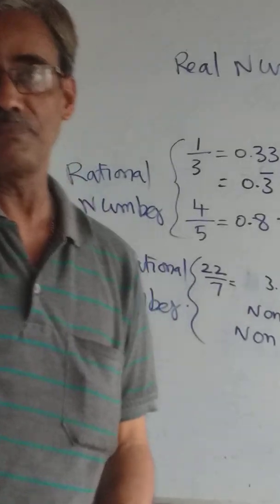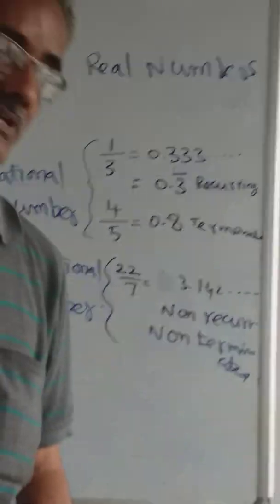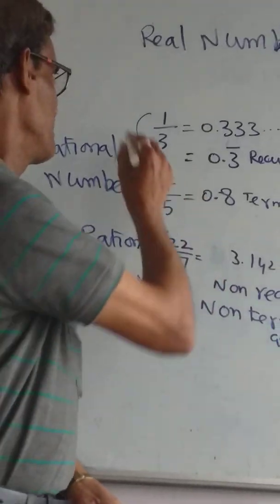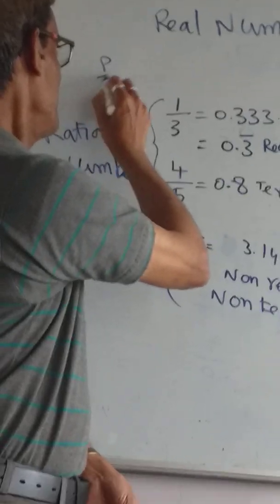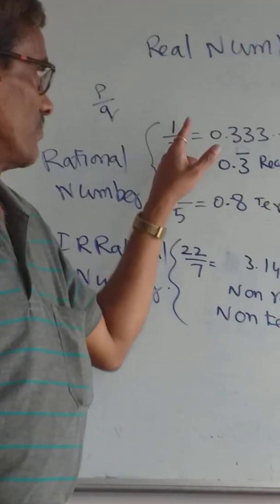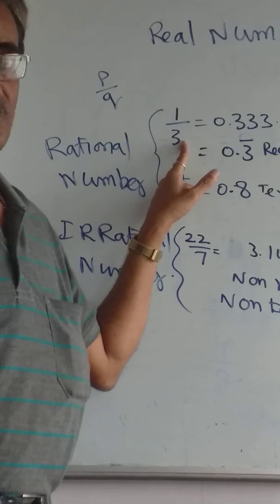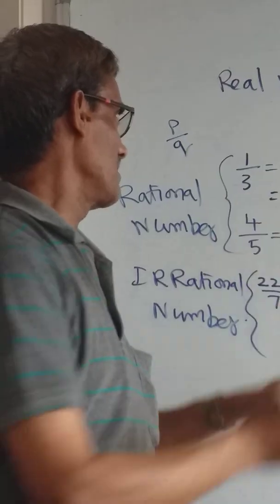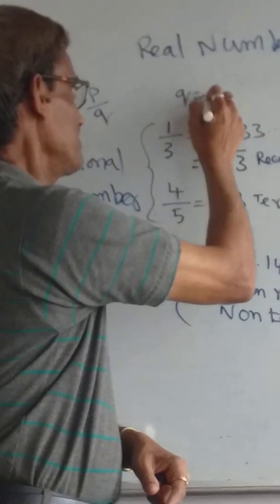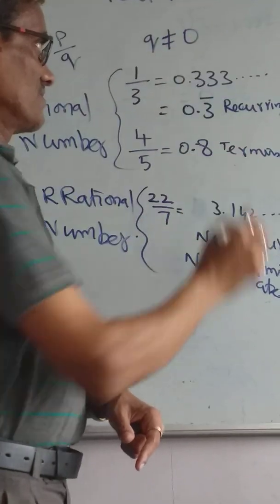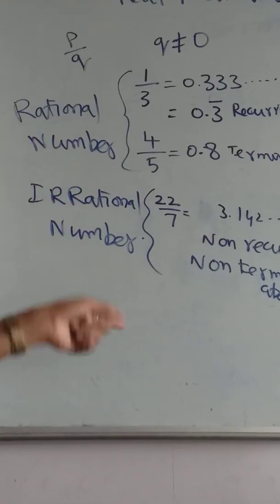Any rational number can be written in the form P by Q. P is the numerator and Q is the denominator. Here, 1 by 3: 1 is P and 3 is Q. But Q should not equal 0.